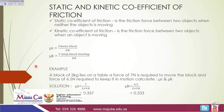Let's look at the static and kinetic coefficient of friction. The static coefficient of friction is the friction force between two objects when neither object is moving, and we use the formula: F needed to move the block over the normal force or weight. The kinetic coefficient of friction is the friction force between two objects when an object is moving, using the formula: F to keep the block moving over the normal force or weight.